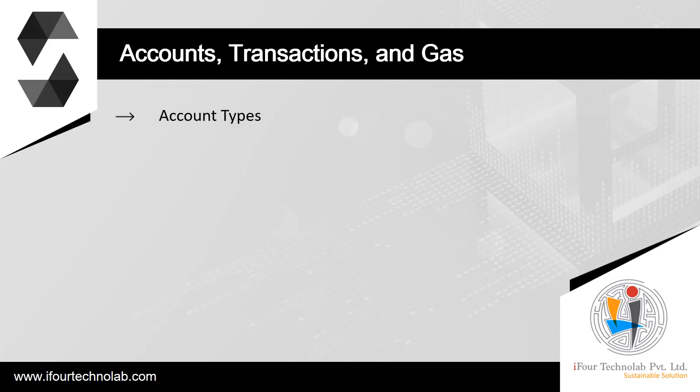There are two types of accounts in Ethereum which share the same address space: external accounts that are controlled by public-private key pairs (i.e., humans), and contract accounts which are controlled by the code stored together with the account. The address of an external account is determined from the public key, while the address of a contract is determined at the time the contract is created — derived from the creator address and the number of transactions sent from that address, the so-called nonce. Every account has a persistent key-value store mapping 256-bit words to 256-bit words called storage, and every account also has a balance in Ether which can be modified by sending transactions that include Ether.